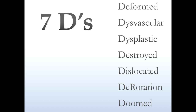To elaborate upon it with a simple helpful mnemonic: it's captured in seven Ds. I shall endeavor to show one or two examples of each. The deformed, as in coxa vara; the dysvascular, as in AVN; dysplastic; destroyed; dislocated; and then add derotation and doomed for good measure.